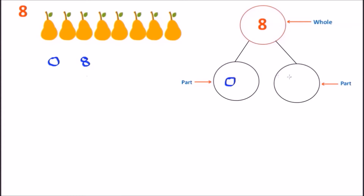So our first part would be a 0 and an 8. The 0 is on the left side, the 8 is on the right side. Those combined together give us the number 8.